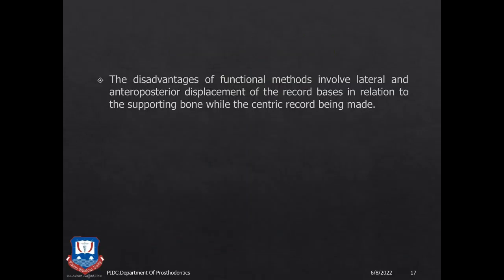The disadvantage of the functional methods is that they involve lateral and anteroposterior displacement of the record bases in relation to the basal tissues and supporting bone. If the ridges are not tall and well-rounded, the excessive functional movements the patient generates may result in distortion or movement of the record bases, resulting in inaccurate recording of centric.